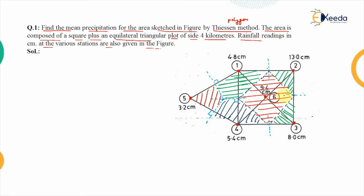These shapes represent the Thiessen polygons. Let me label them to avoid confusion: this is A, then B, C, D, E, F, G, and H. Within the triangle we have sub-areas including triangle ABC and the triangle on the opposite side.